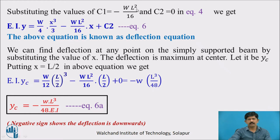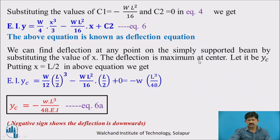Substituting C1 = −WL²/16 and C2 = 0 in equation 4, we get EI·y = (W/12)·x³ − (WL²/16)·x. This is equation 6, known as the deflection equation. We can find deflection at any point by substituting the value of x. The deflection is maximum at the center; putting x = L/2, we get EI·yC = −WL³/48, therefore yC = −WL³/48EI (equation 6A). The negative sign shows the deflection is downward.